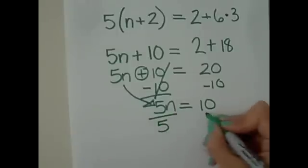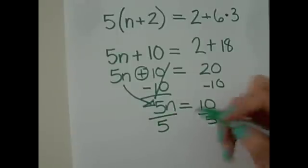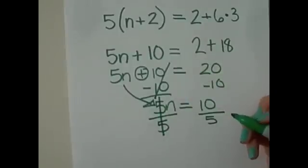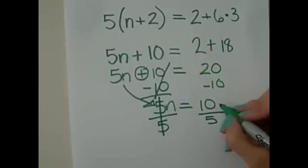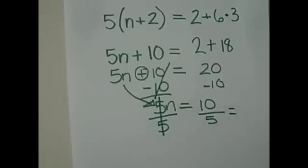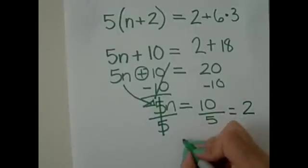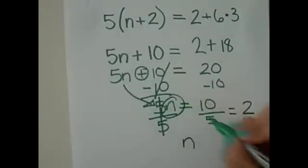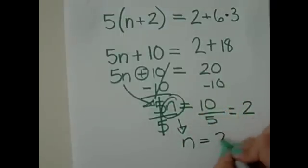And do the same on this side. 10 divided by 5. This crosses out. And here, we get 10 over 5, which equals, which is like 10 divided by 5, which is 2. So, there's your answer. n, because you isolated it, so bring it down. n equals 2. And there's your answer.